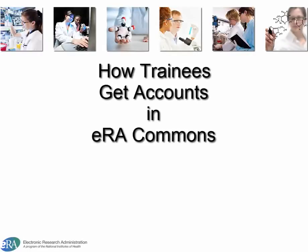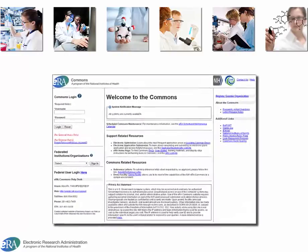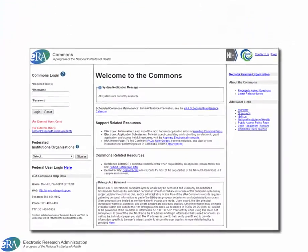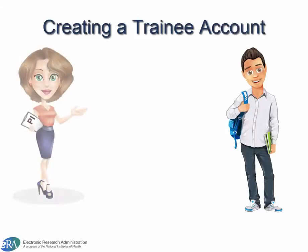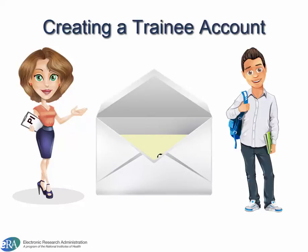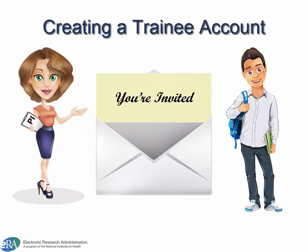Welcome to this tutorial on how trainees get accounts in ERA Commons. Trainees are another type of account used in ERA Commons, and the creation of these accounts is a little different from scientific or administrative accounts. Trainees are typically invited to register in ERA Commons by their Sponsoring Principal Investigator, or PI. Here are the steps a PI takes to invite a trainee to ERA Commons.